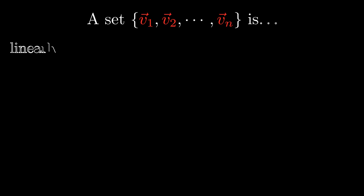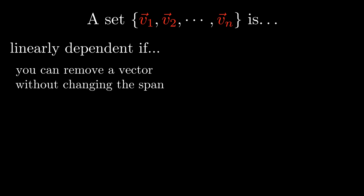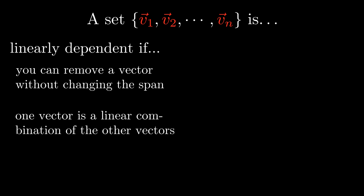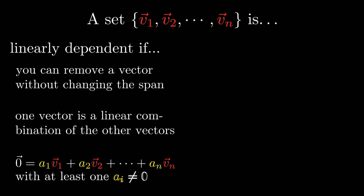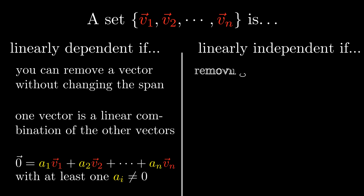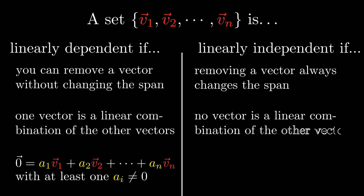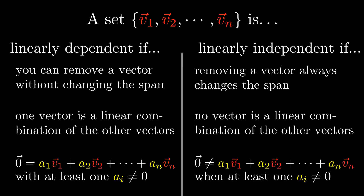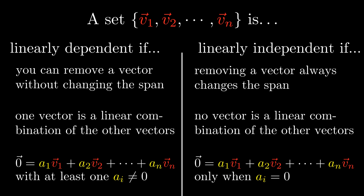So we now have three different definitions of linear dependence. A set of vectors is linearly dependent if it's possible to remove a vector without changing the span, if one vector can be written as a linear combination of the other vectors, or if it's possible to write the zero vector as a linear combination of the vectors with at least one non-zero coefficient. We can negate each of these statements to get three similar conditions for linear independence: a set of vectors is linearly independent if removing a vector always changes the span, if no vector can be written as a linear combination of the other vectors, and if it's impossible to write the zero vector as a linear combination of the vectors with at least one non-zero coefficient. The last of these has a double negative, which we can remove by saying that when the zero vector is a linear combination of the other vectors, then all of the coefficients are zero.